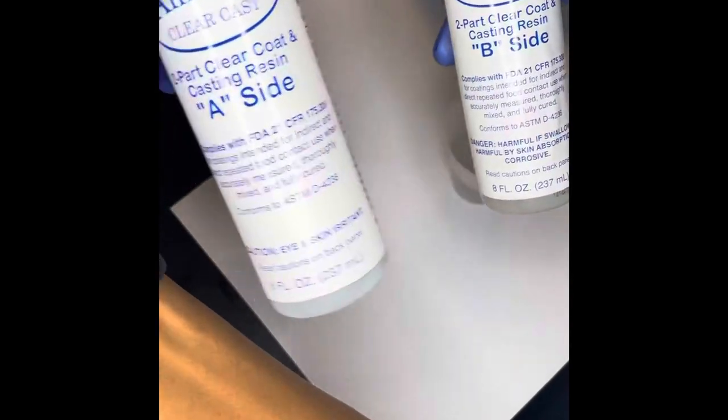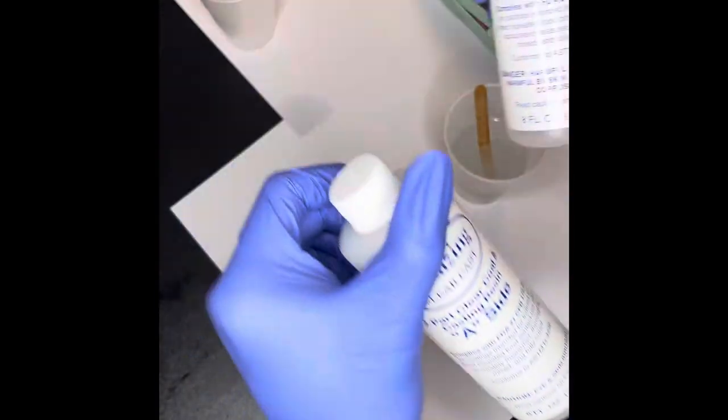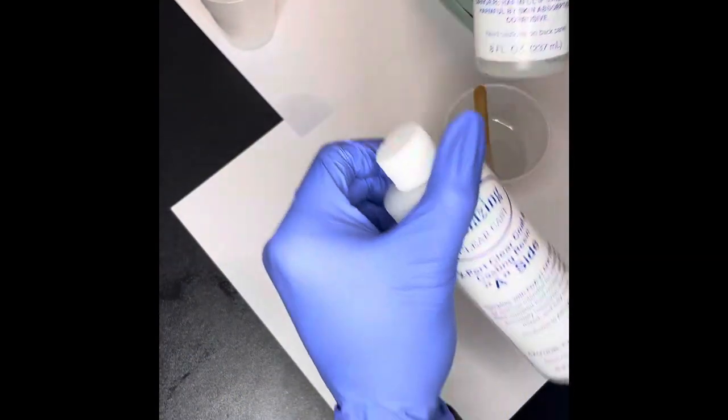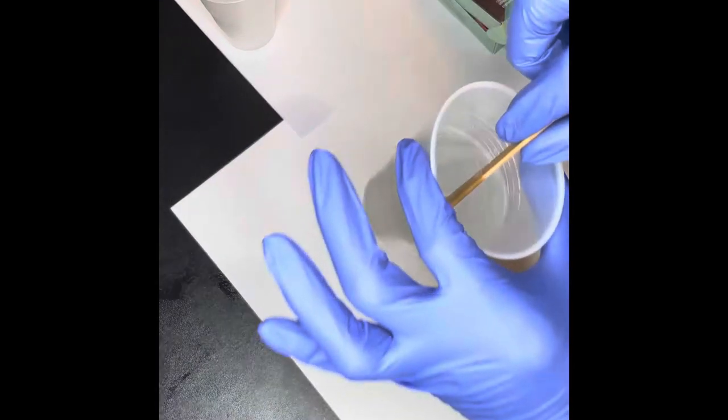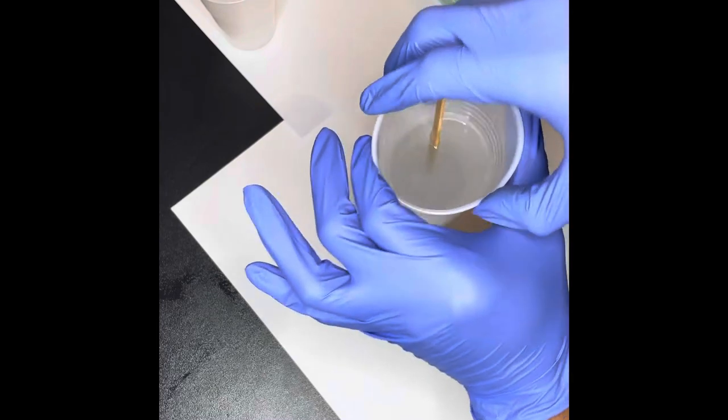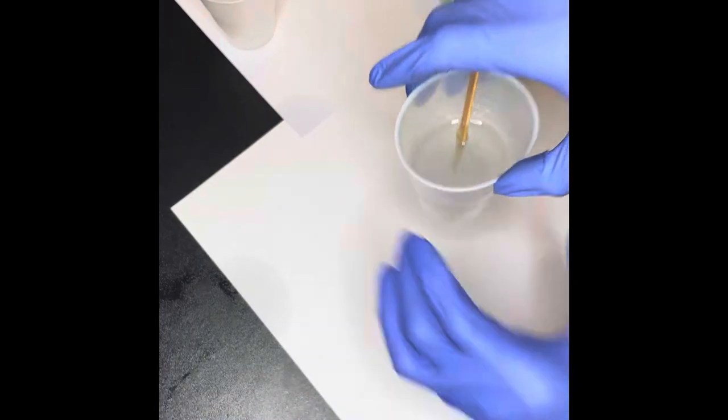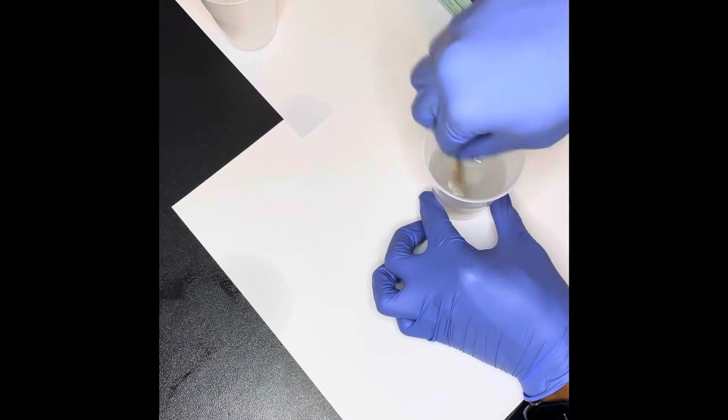Right here we got parts A, parts B of the amazing clear cast. I already got it in a cup. So right here I'm mixing up the resin, parts A and parts B. You want to just keep on mixing and mixing.